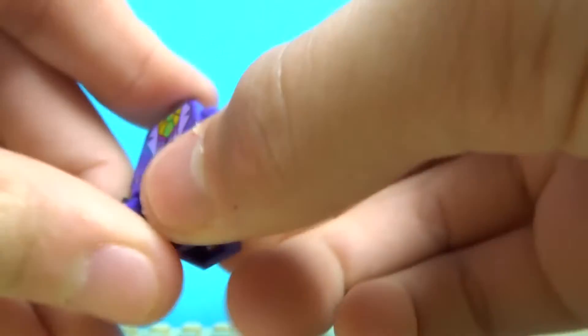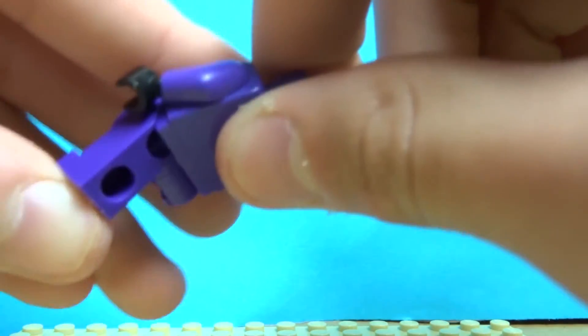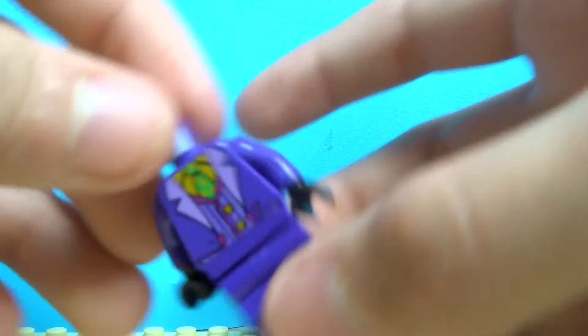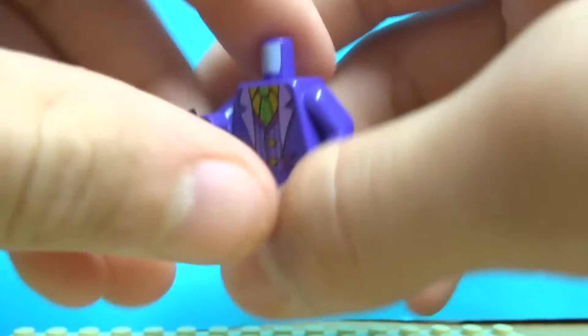So first you'll need a minifigure Joker from Batman. The torso he has is really good for King Dice. I think it's going to be perfect for King Dice. I've used this in my animations.